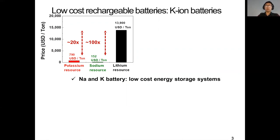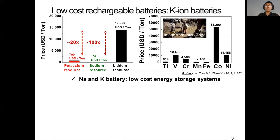First of all, potassium resources are abundant, comparable to sodium resources on earth, and potassium resources are much cheaper than lithium resources, as you can see in this figure. Another advantage is that potassium-ion batteries do not necessarily use cobalt as a redox-active element. The lithium-ion battery was commercialized due to the development of not only graphite but also lithium cobalt oxide. However, if we move to potassium-ion batteries, there are many other options including titanium, vanadium, chromium, manganese, and iron, and we can reduce cathode production cost further.